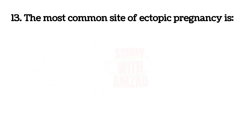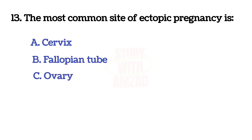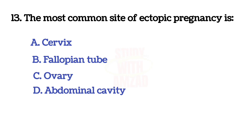The most common site of ectopic pregnancy is? The correct answer is B: Fallopian tube.